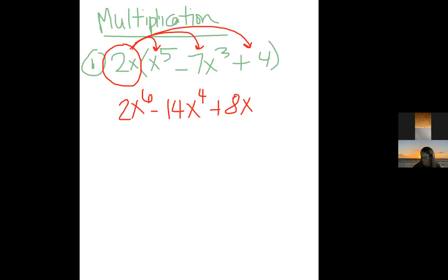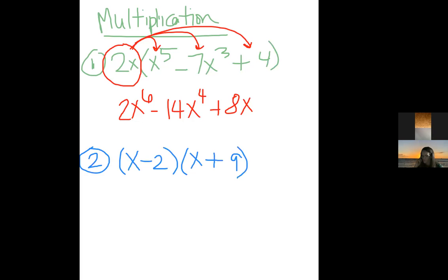Now, to take it up a notch: FOIL. You could also use the box method — I'll show you both. FOIL stands for First, Outer, Inner, Last. It's basically a double distributing problem. Let's do a simple one: (x − 2)(x + 9).